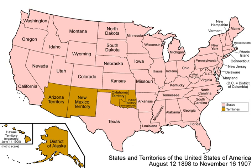A dramatic expansion in farming took place. The number of farms tripled from 2.0 million in 1860 to 6.0 million in 1905. The number of people living on farms grew from about 10 million in 1860 to 22 million in 1880 to 31 million in 1905. The value of farms soared from $8 billion in 1860 to $30 billion in 1906. The federal government issued 160-acre tracts virtually free to settlers under the Homestead Act of 1862. Even larger numbers purchased lands at very low interest from the new railroads, which were trying to create markets.